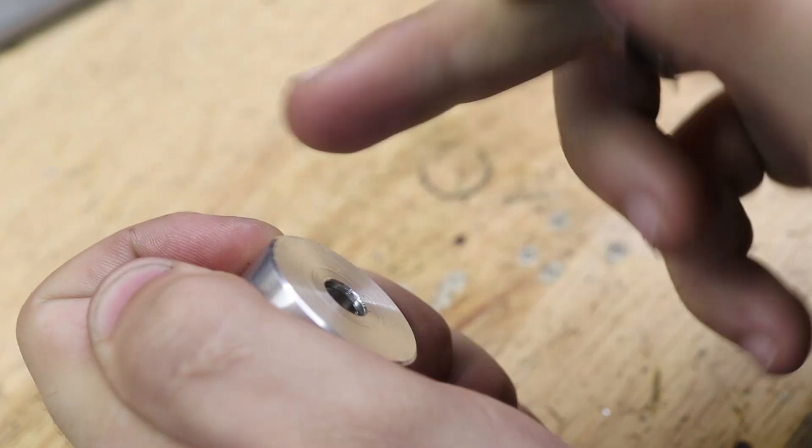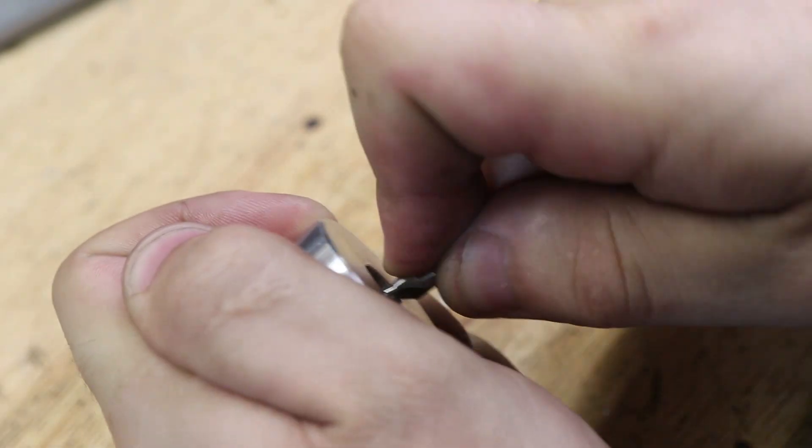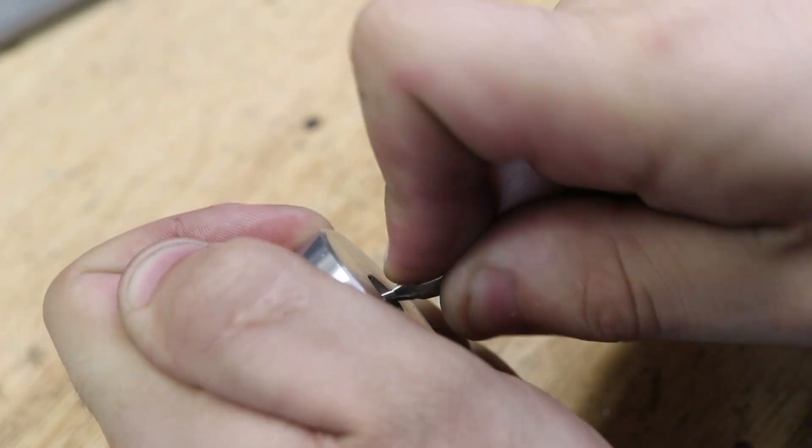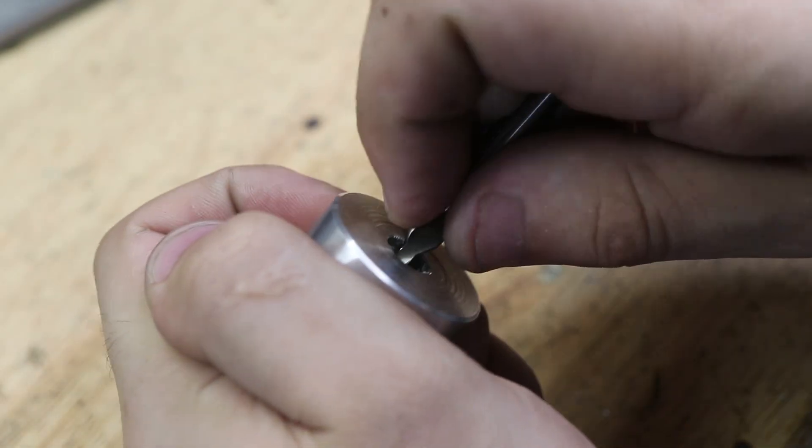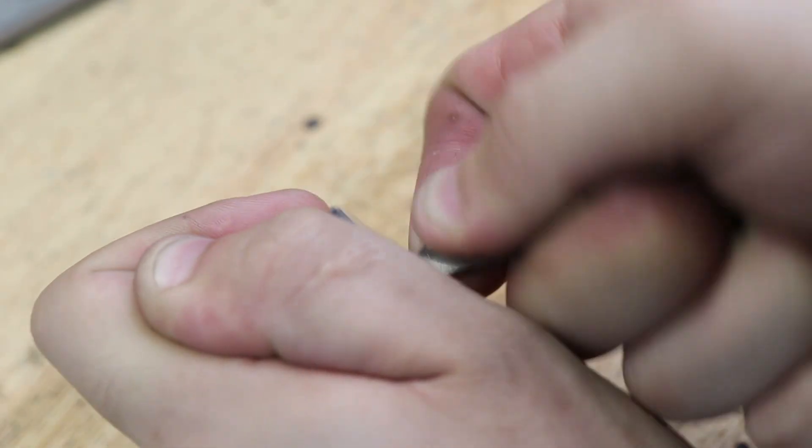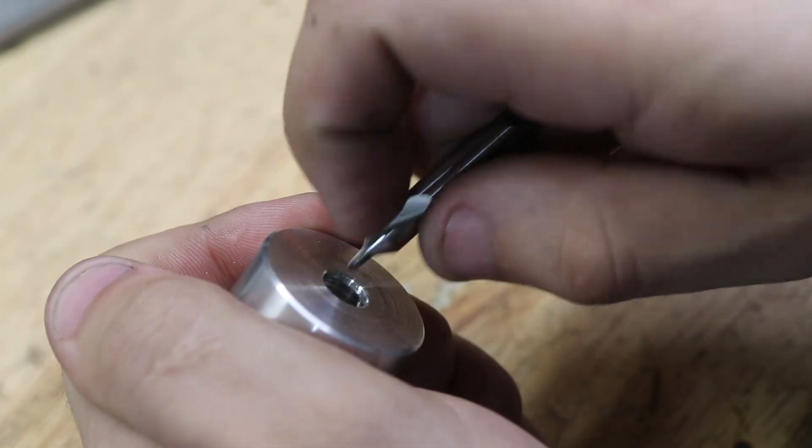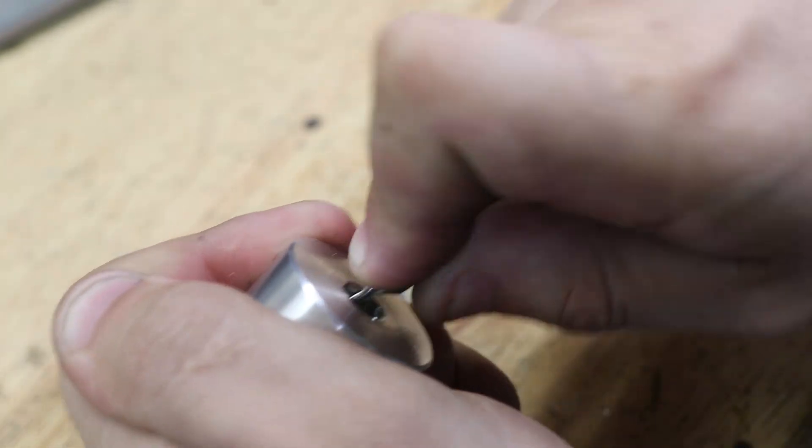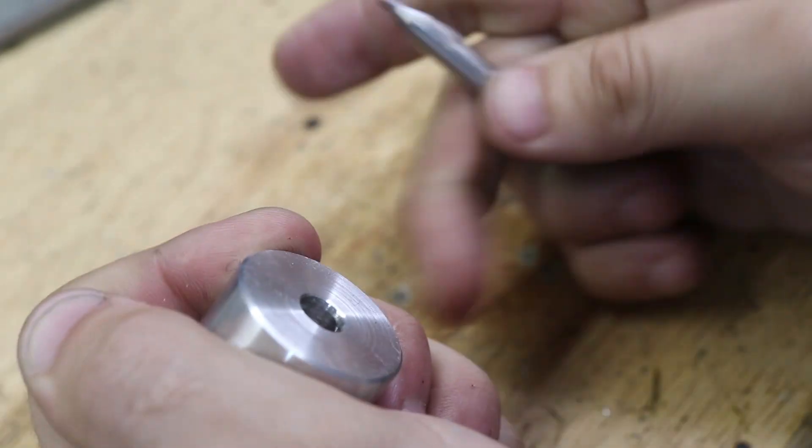This edge is really sharp and I've found that it deburrs aluminum really nicely. My preference has always been to use high speed steel to deburr aluminum. I just prefer using a really sharp piece of high speed steel to deburr aluminum compared to the carbide ones.